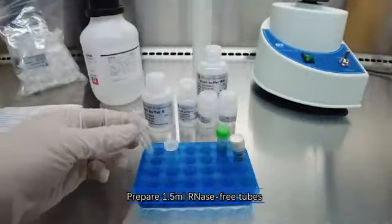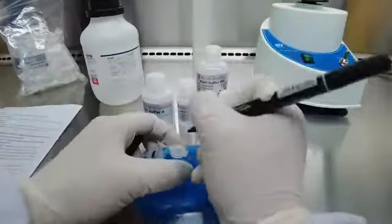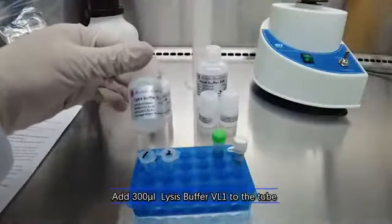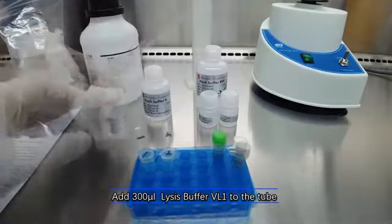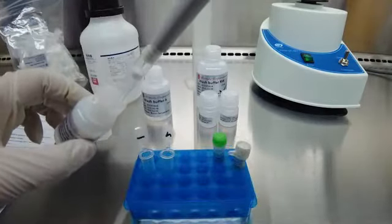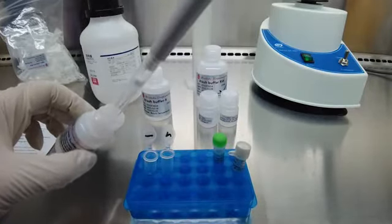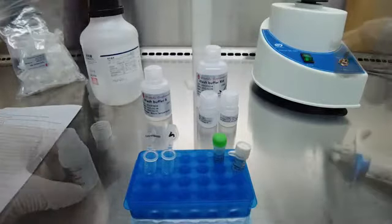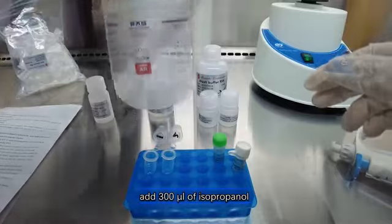Prepare 1.5 ml RNase free tubes. Add 300 µL Lysis Buffer VL1 to the tube. Add 300 µL Isopropanol.